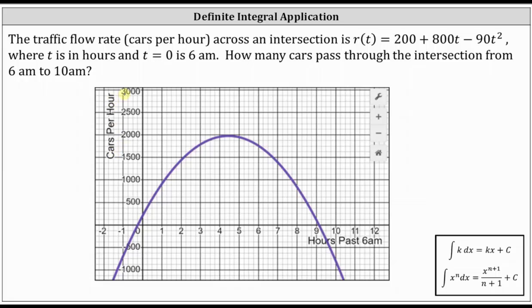Because we're looking for the number of cars passing through the intersection from 6 a.m. to 10 a.m., if t = 0 is 6 a.m., notice t = 4 is 10 a.m., since 10 a.m. is four hours past 6 a.m., which means we're concerned about the closed interval from zero to four along the horizontal axis.